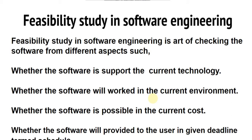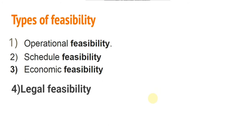With the help of feasibility study we also schedule the software development — whether the software will be completed within the given time. If the user wants the software in two months, it is the responsibility of the software company to study whether that deadline is achievable. So that covers the feasibility overview. Now let's move towards the different types of feasibility.